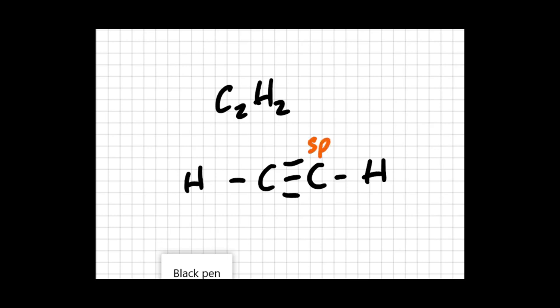So it's the sp orbitals in the carbons that are overlapping with each other, and it's an sp orbital from a carbon that's overlapping with the s orbital from a hydrogen. And that's forming three sigma bonds. So we have a sigma bond between the carbon and the hydrogen, a sigma bond between this carbon and the hydrogen, and then you have a sigma bond between the two carbons. Remember those sigma bonds are those end-to-end overlapping. They're really stable. Because of our sp hybridization, we have two unhybridized p orbitals.